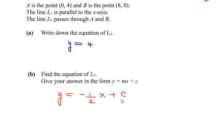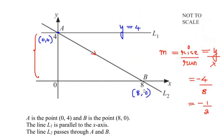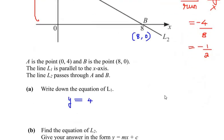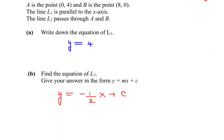Now c is the y-intercept, which means we need to find where line L2 cuts the y-axis. We can see that L2 cuts the y-axis at point 4, so 4 is our y-intercept. Substituting the value of c, the equation of straight line L2 is y = -½x + 4.